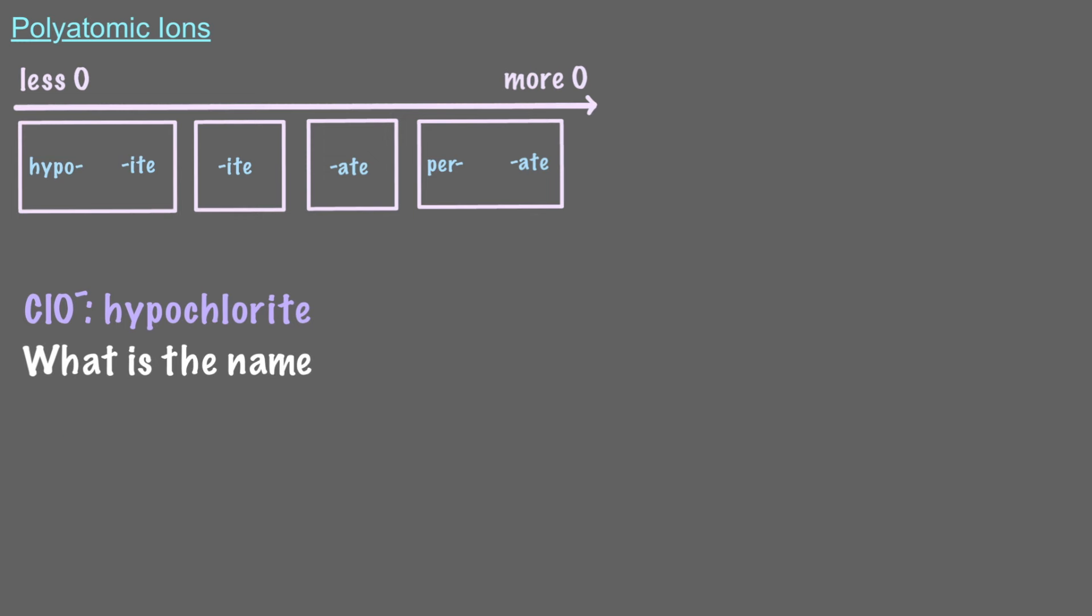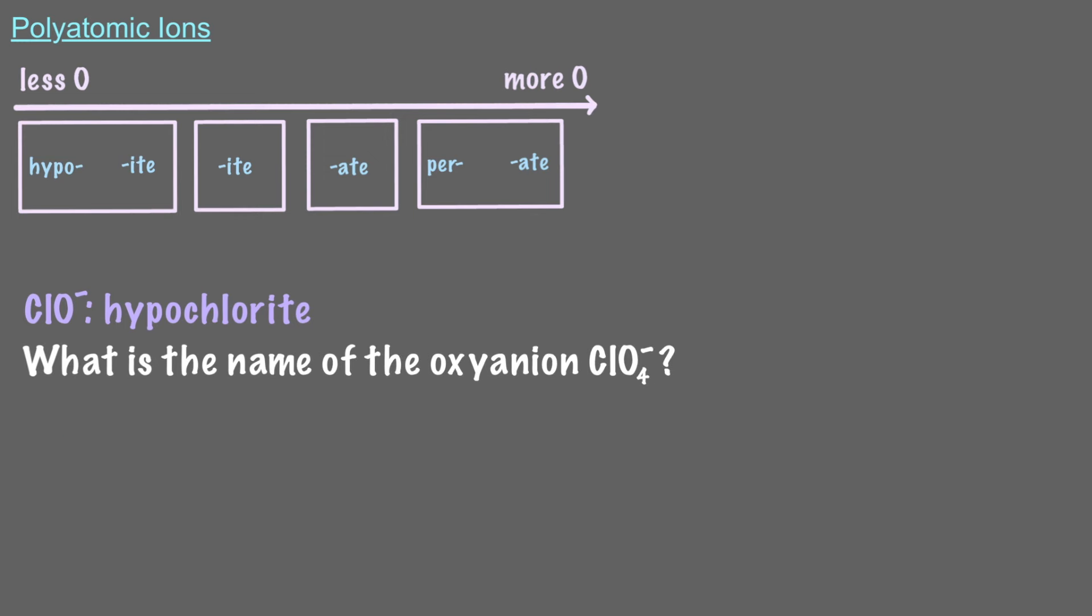What is the name of the oxyanion ClO4-? Exactly, ClO4- has the greatest possible number of oxygens, so we name it perchlorate.